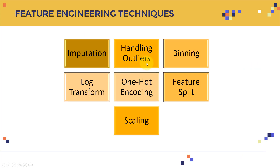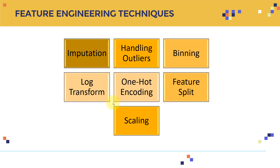So what feature engineering techniques are available? There are tons of them, but we'll cover as many as possible to prepare you for the exam. These include: imputation, handling outliers, binning, log transform, one-hot encoding, feature split, scaling, and many more. We're going to cover all of these at minimum in the next couple of lectures.